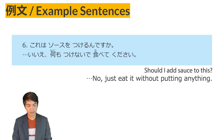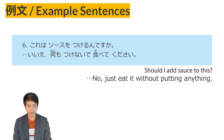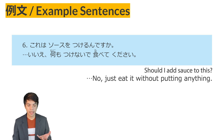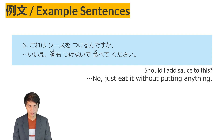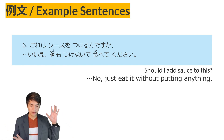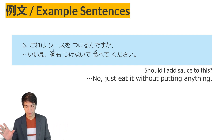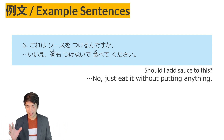Example sentence number six: Kore wa soosu wo tsukerun desu ka? Ie, nani mo tsukenai de tabite kudasai. The first person asked, 'Should I add sauce to this?' He replied, 'No, don't put anything — nani mo tsukenai de, without adding anything — tabite kudasai, please eat it.' This demonstrates the verb naide verb pattern.